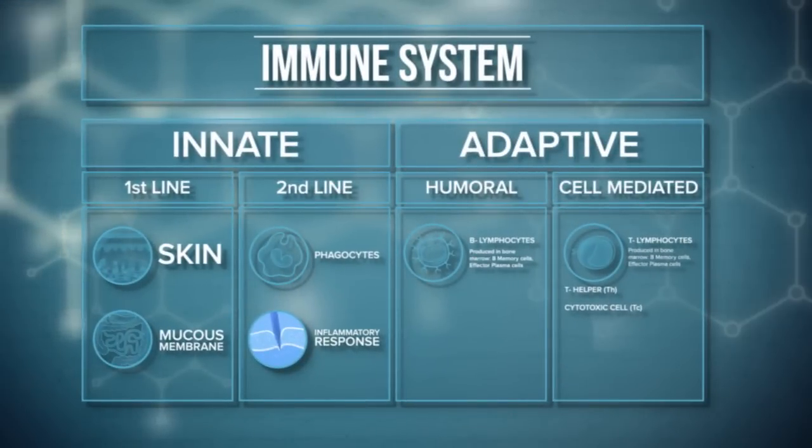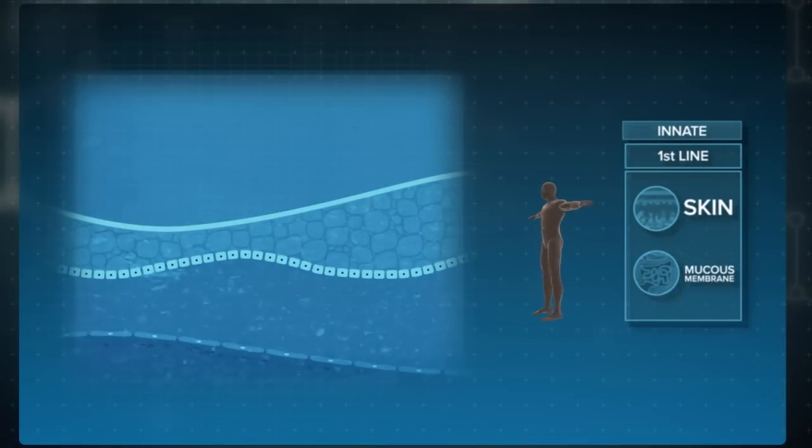Your immune system has a number of defenses against pathogens. Under innate immunity, the first line of defense is your skin, mucous membrane, as well as lysozyme in sweat and tears and others. These keep pathogens out of the body.